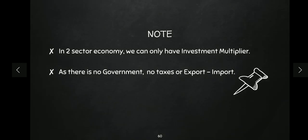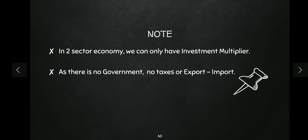One last thing: in a two-sector economy, there is no government and no foreign sector, so only the investment multiplier operates — the government expenditure multiplier, tax multiplier, and export/import multiplier do not apply. In this video we have covered the entire concept of investment multiplier. In the next video I will explain the government expenditure multiplier. Please give a thumbs up, share it with your friends, and let me know in the comments how you liked it. Thank you!